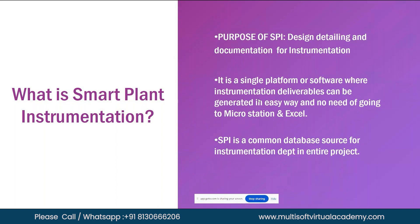To understand data centricity with a real-life example: say you have a driving license, residential ID, passport, and taxation identity cards. If you want to update your permanent address and you are in a data centricity platform, you update only in the passport — automatically all other associated documents also get updated with the latest address. You don't need to update individual documents. That's the major benefit of SPI.